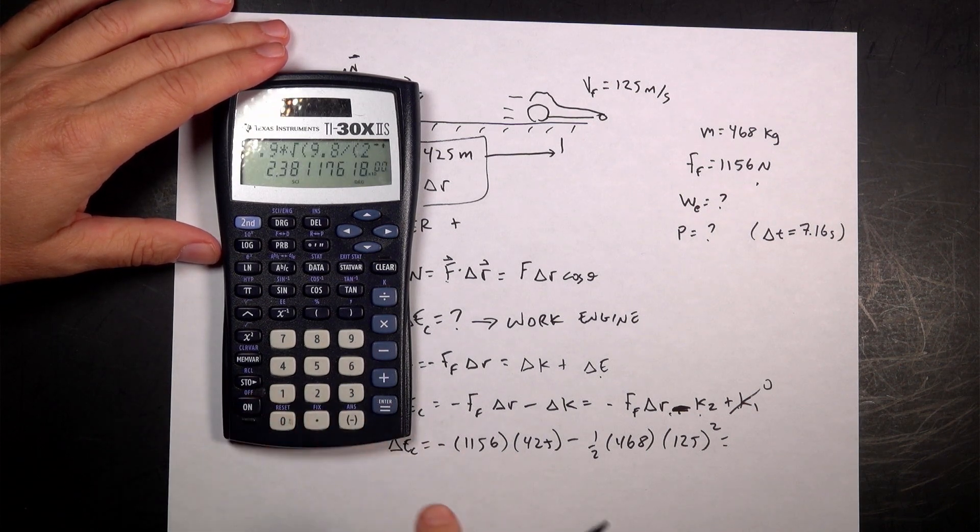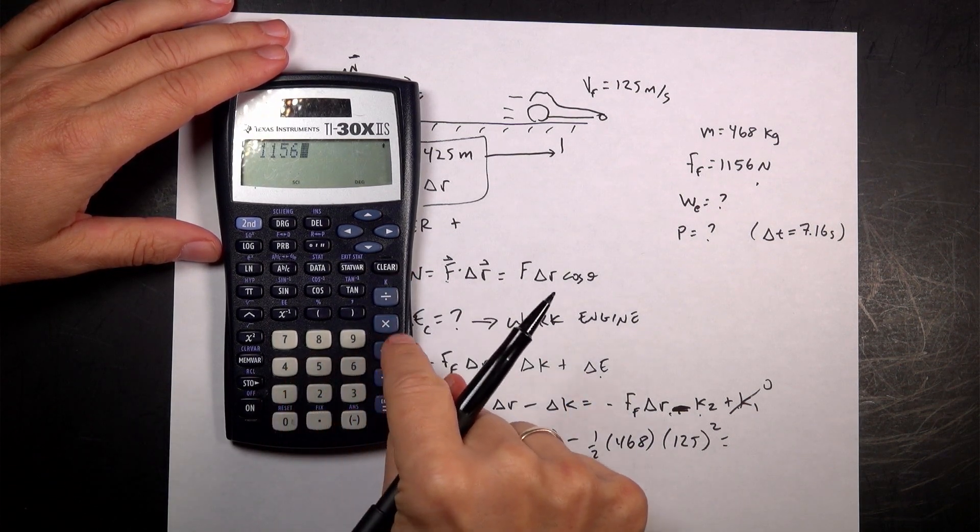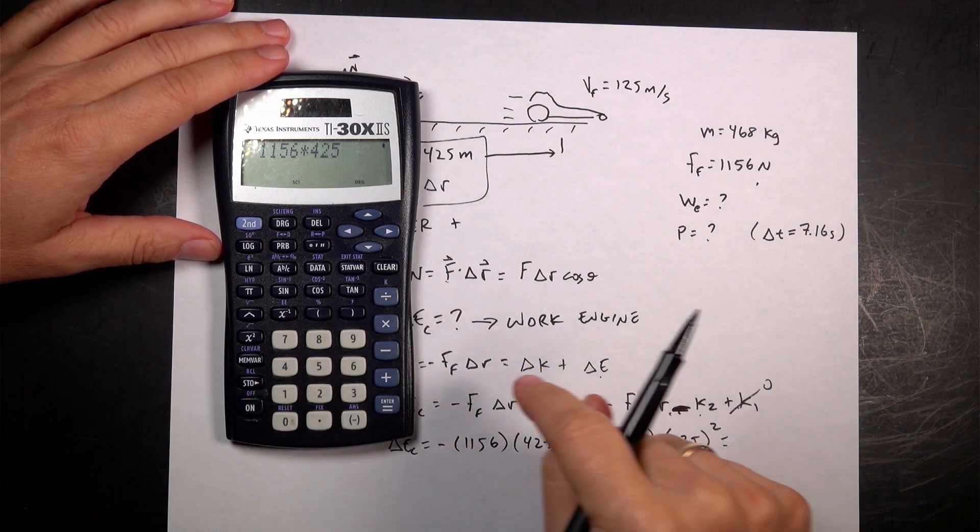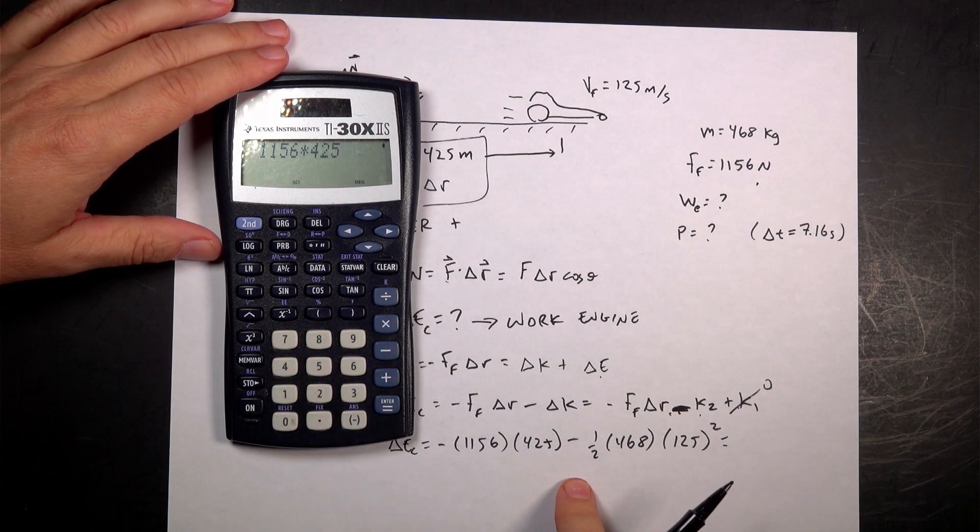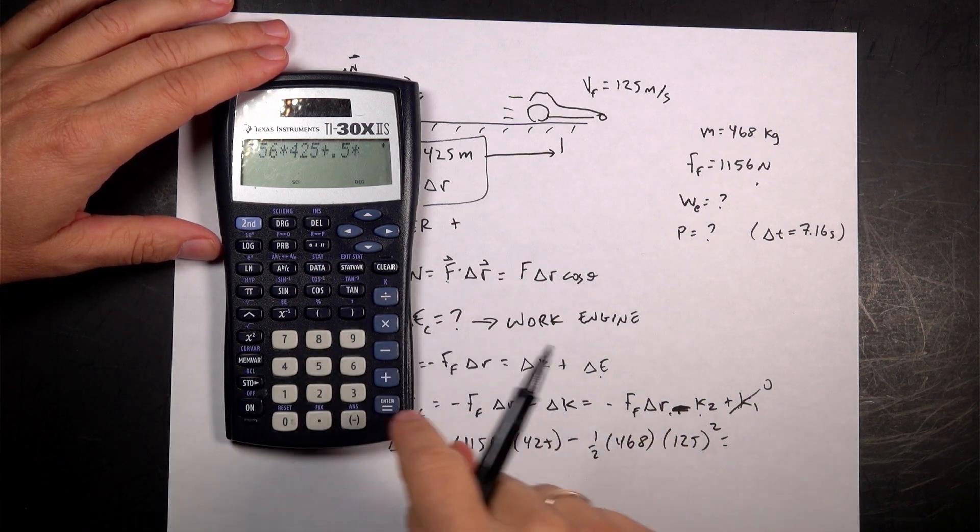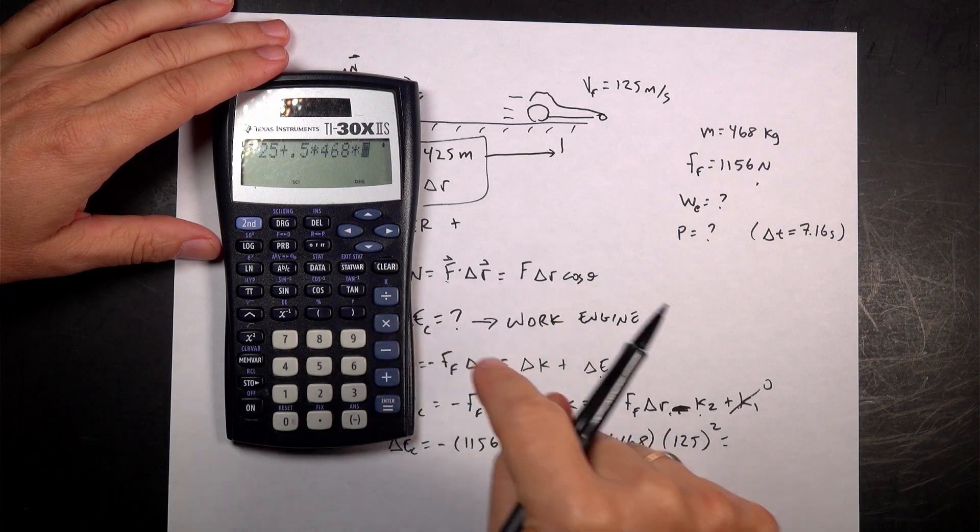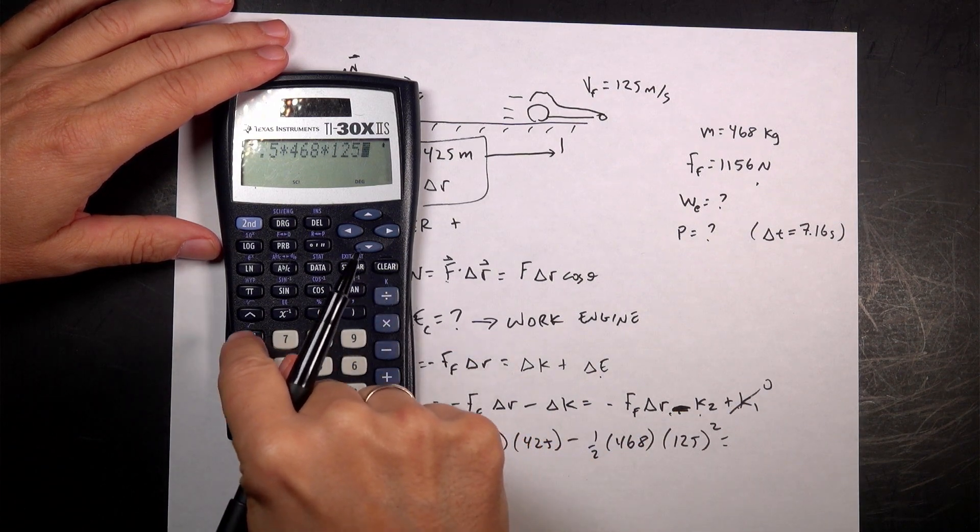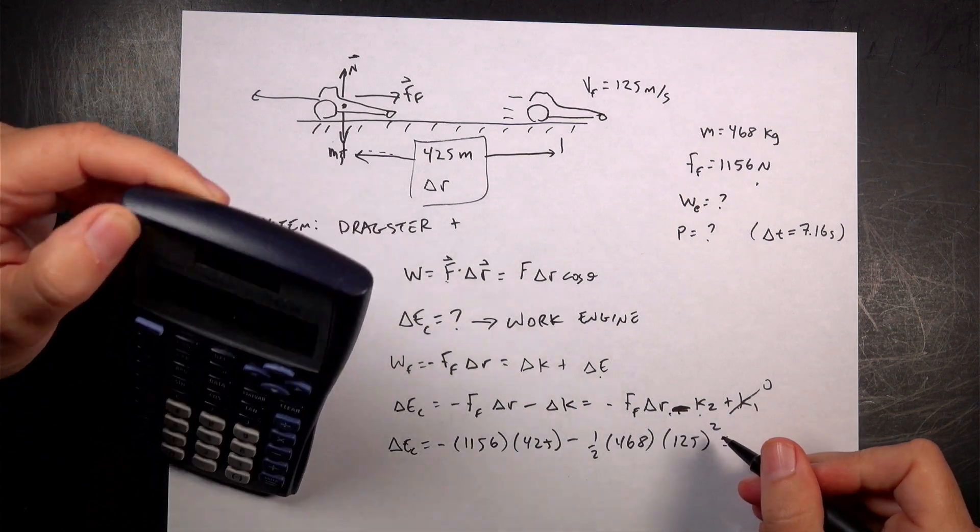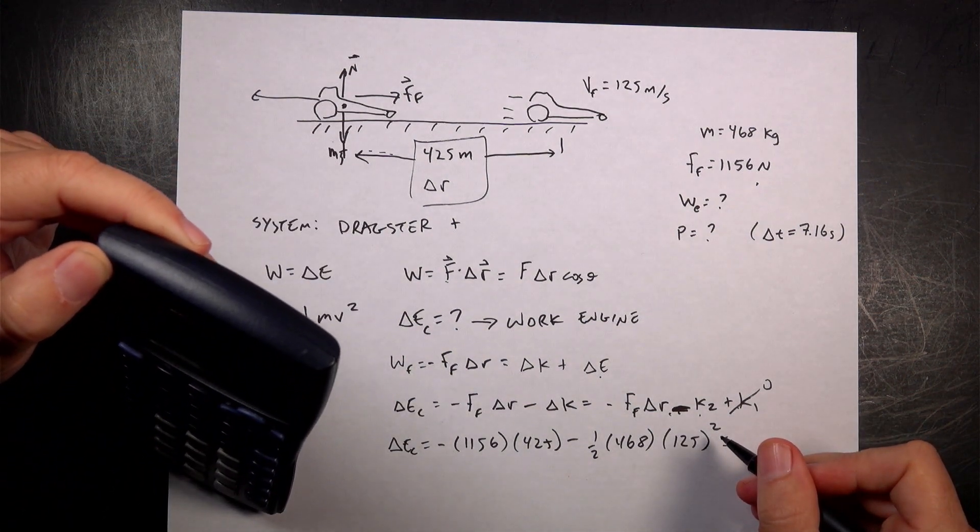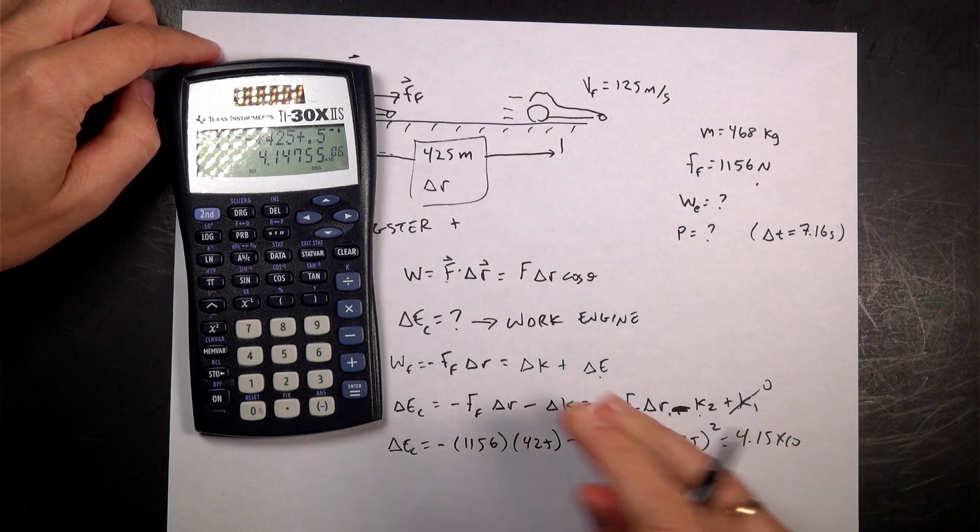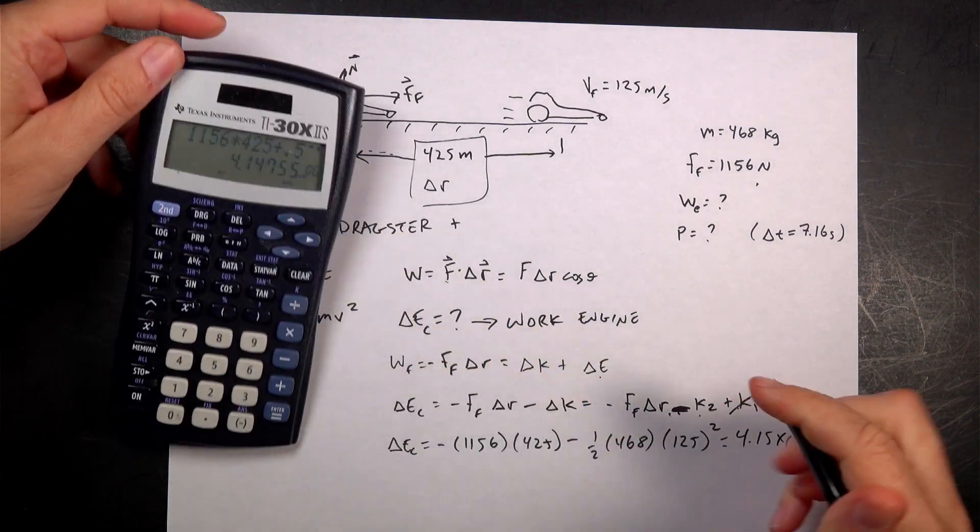I'm going to clear: 1,156 times 425. And now I'm taking the opposite, so I'll say plus. So plus 0.5 times 468 times 125 squared equals... Well, that's 4.15 times 10 to the 6 joules.